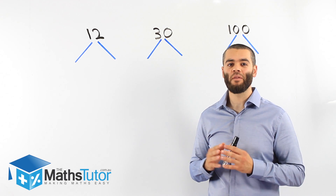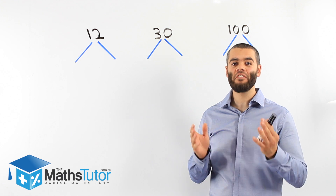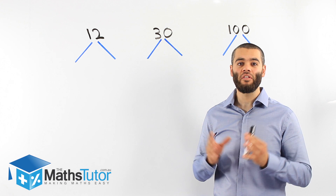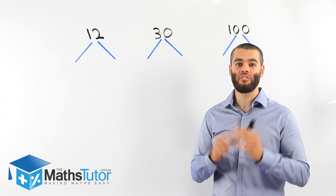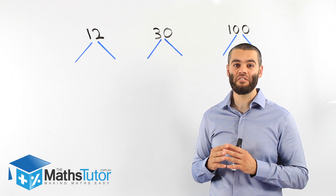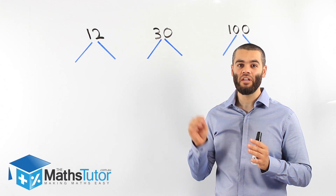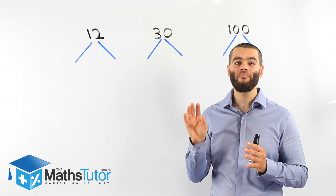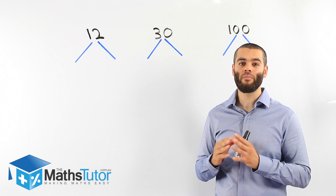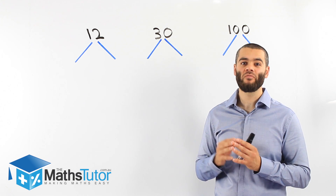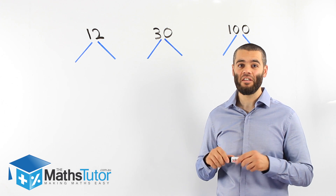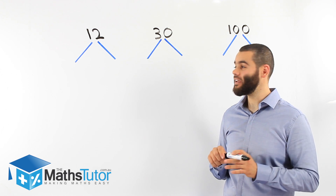Too many times students ask how do you solve a factor tree — they think it looks hard, but it's actually very easy if you know your factors. A factor tree is basically working out the factors of a number and writing down at the end the prime numbers that multiply together to make that number at the top of the factor tree.